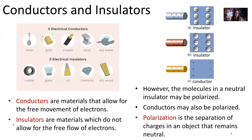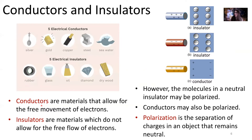Some materials are insulators — these are materials which don't allow for the free flow of electrons. But conductors are materials that allow for the free movement of electrons. In conductors, the electrons orbiting around the nucleus of the atom — some of those electrons are free to move around and jump out of their orbitals. Those electrons are free to exchange between different materials and also to flow within the same material.